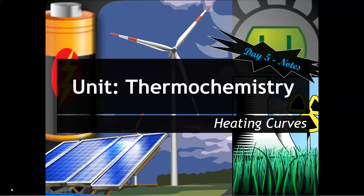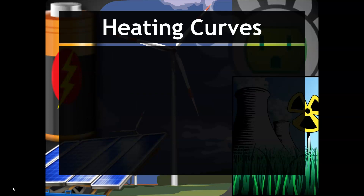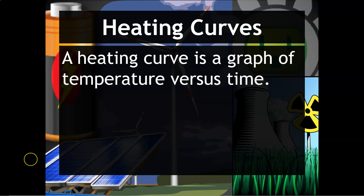Hi chemists, we are almost done with our unit on thermochemistry. This is the second-to-last video in this series, so we are going to be working on heating curves. You probably are familiar with these from middle school, but now we are going to relate what we observe on the macroscopic level to applying mathematical calculations to the energy changes associated with this. After this video you should be able to explain what occurs on each point of a heating curve and calculate the total energy required for water to go through its phase changes.